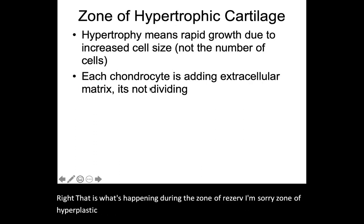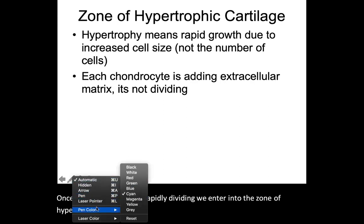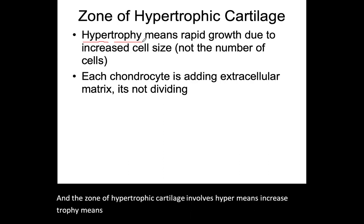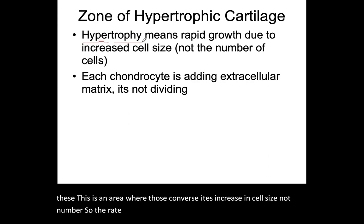Once those cells are done rapidly dividing, we enter into the zone of hypertrophic cartilage. "Hyper" means increase, and "trophy" means to feed — when you feed a lot, you get bigger. So this is an area where those chondrocytes increase in cell size, not number. The rate of division slows down, almost stops, and those cells then transition into getting larger.